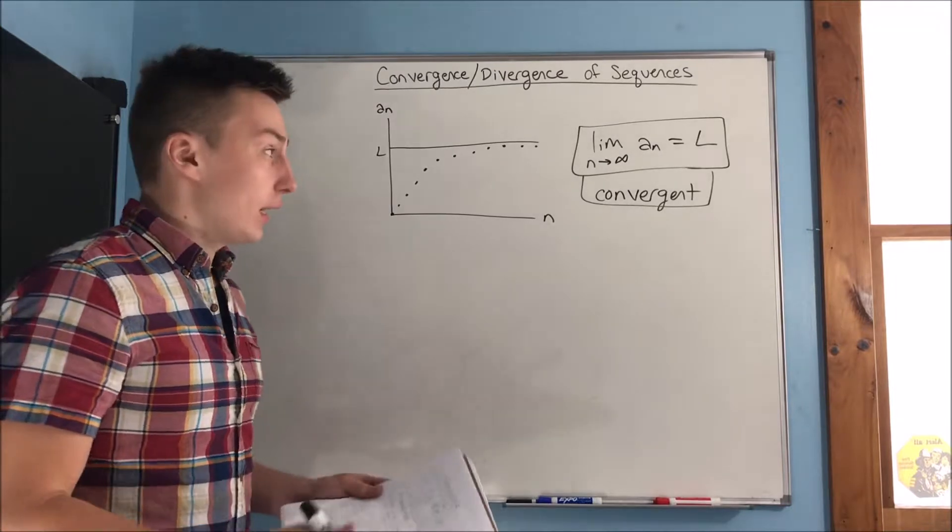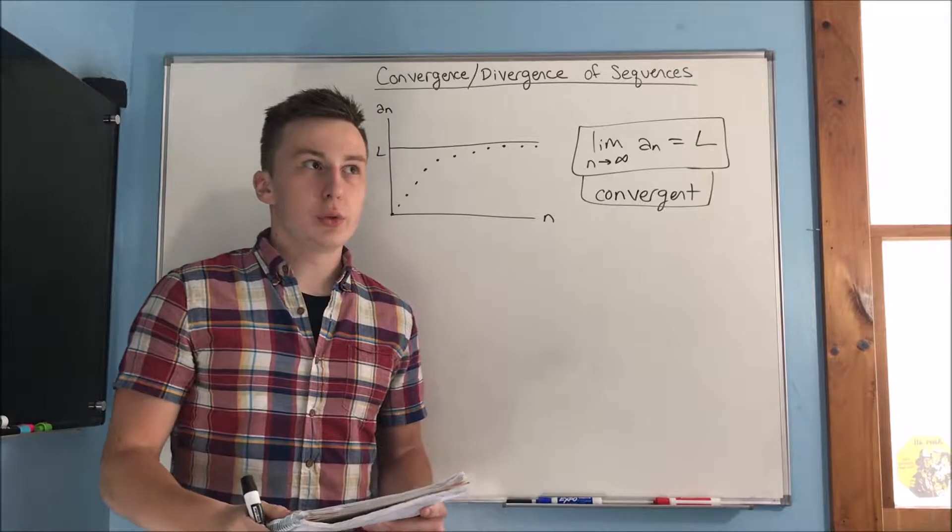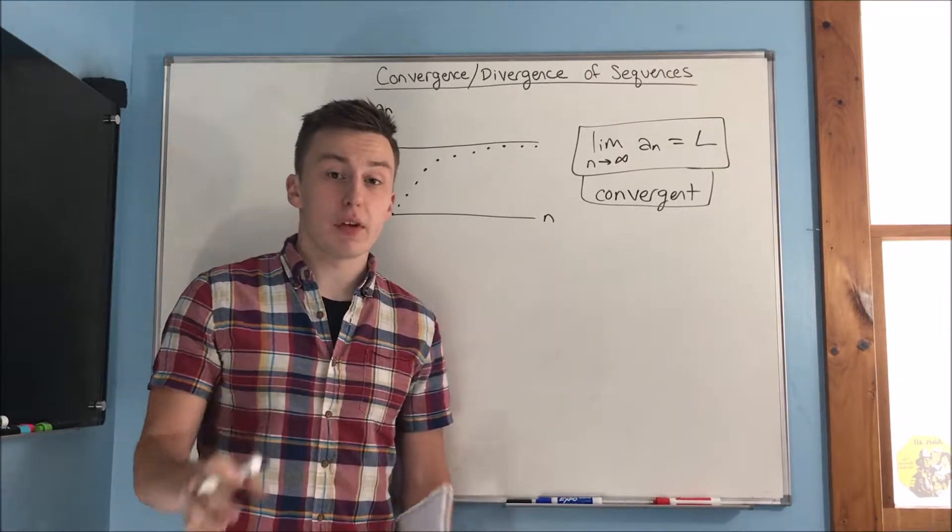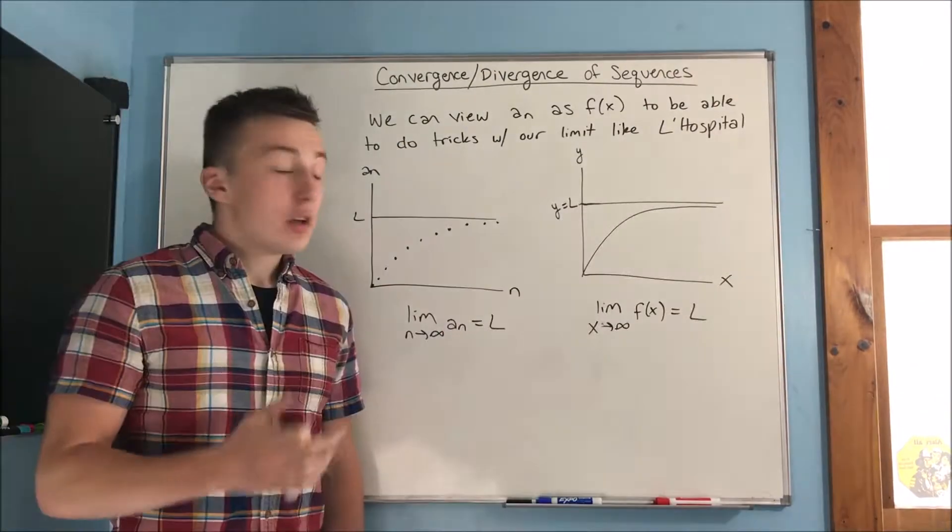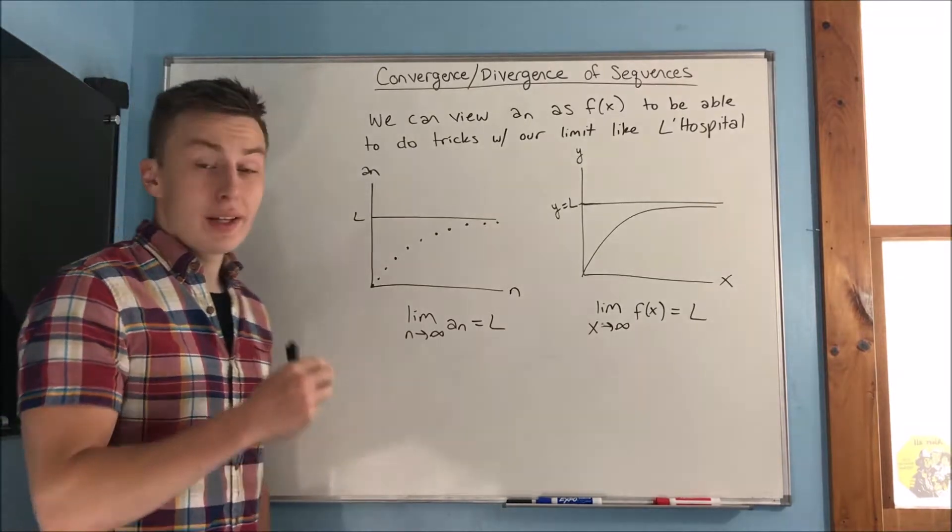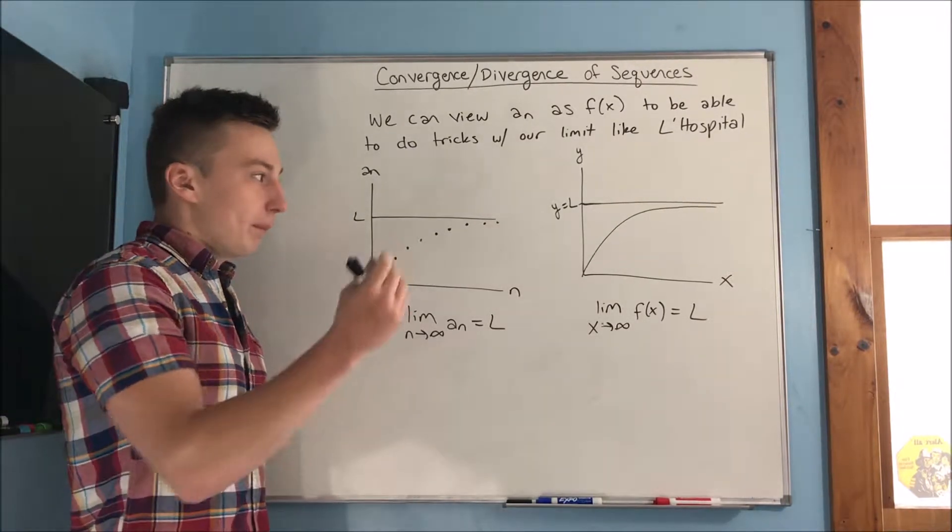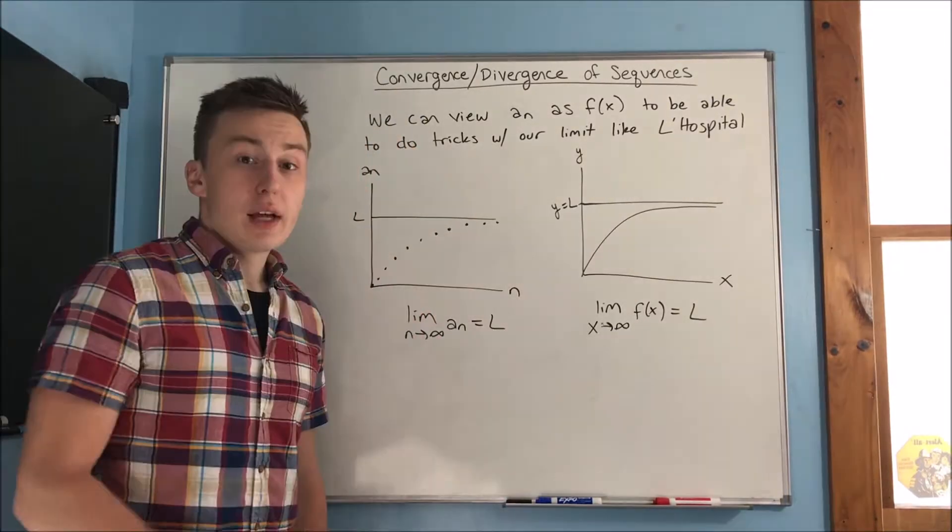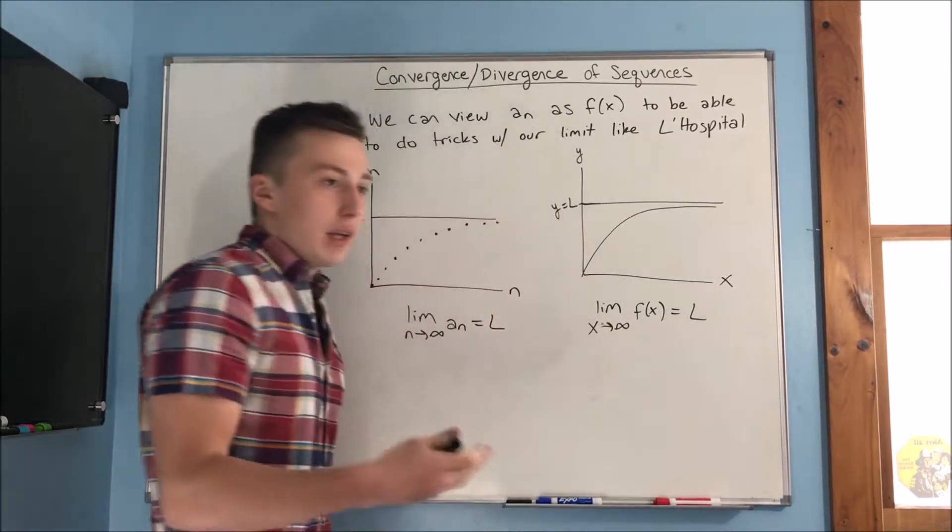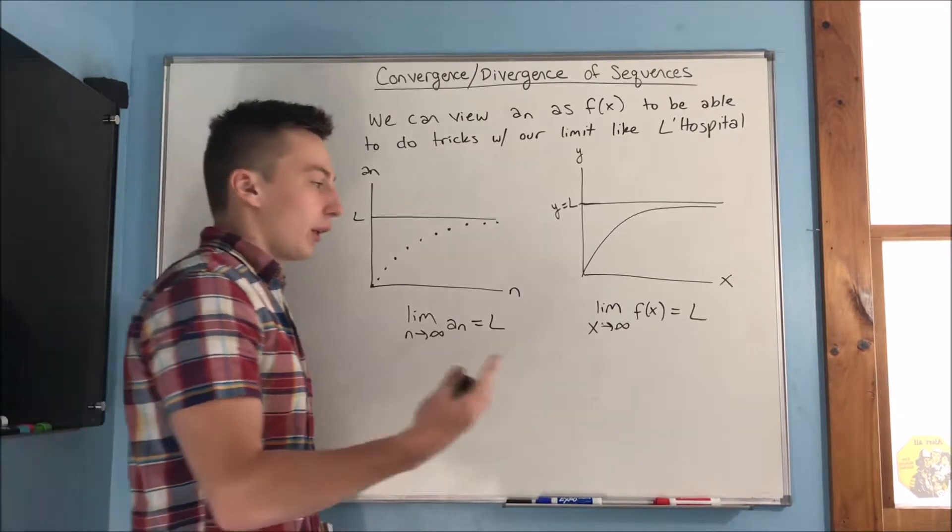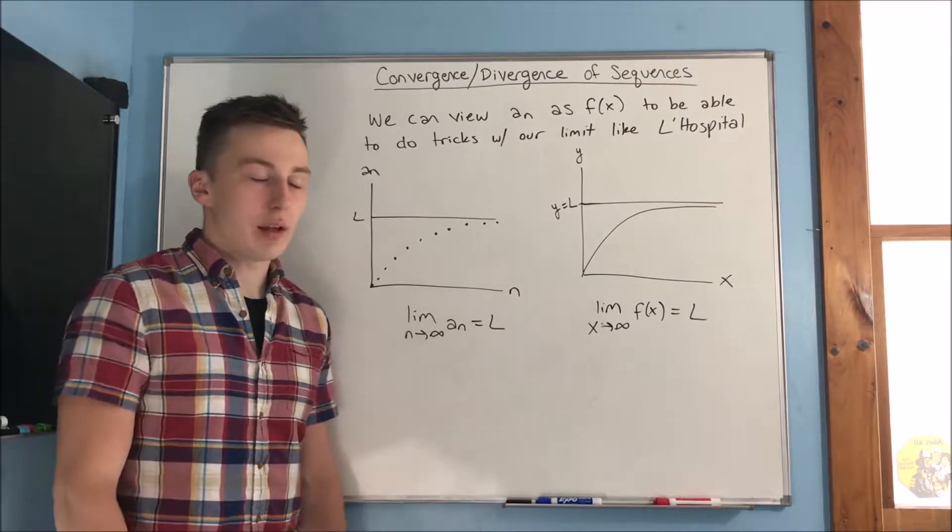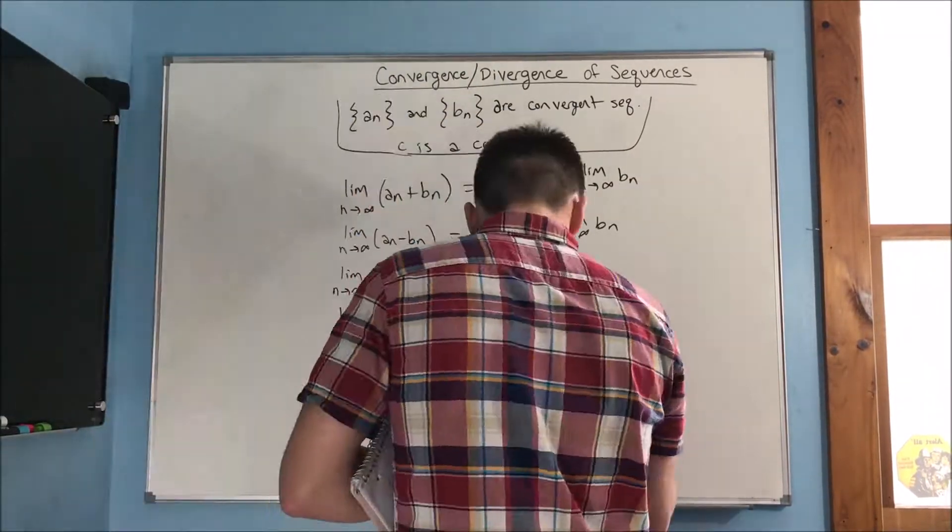So we're going to just go over a couple theorems that you're going to need to know. It's nothing really too out of the ordinary, and then we're going to be doing some examples of all this stuff in the coming videos. So we're actually able to view a sub n as if it was f of x, because then we're able to use tricks like L'Hopital. When you have something in a limit, you get 0 over 0, infinity over infinity, things like that. Well, now you can use L'Hopital by comparing a sub n to f of x. The reason that we can't use L'Hopital for just our regular sequences and not have to worry about all this f of x stuff is because L'Hopital's rule only works for or only applies to functions of a real variable and not to sequences, so you have to just compare it to f of x.